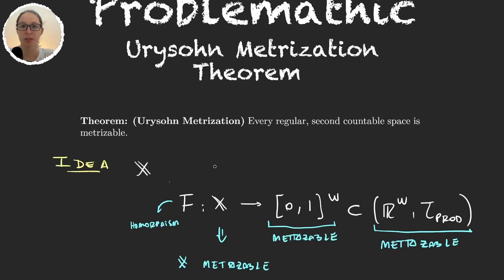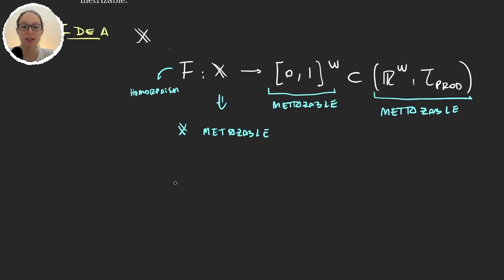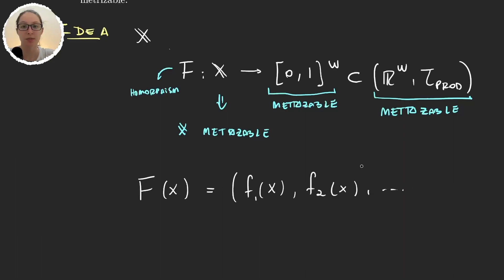This function f, because it goes to [0,1]^ω, is a function of many variables. It takes one element x and returns a tuple of functions — f₁(x), f₂(x), and so on — infinitely many functions defined from X to [0,1]. So to build f we first have to build this countable sequence of functions from X to [0,1].